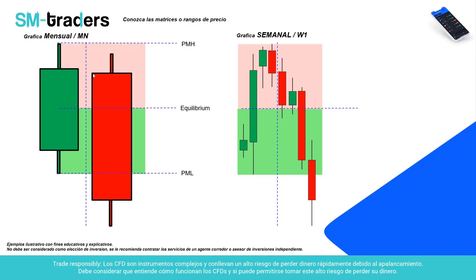Al bajarnos ya tenemos el open de esta vela, de este mes que inició. El precio sube a una zona de premium o de oferta, que es la zona rosada. Si trasladamos la visión a esta gráfica, estamos tomando el máximo —el previous monthly high o el alto anterior del mes— y el bajo más bajo del mes anterior. Dentro de ese rango de precio, entre el mínimo y el máximo, al siguiente mes van a ocurrir muchas cosas; en H1, M15, M30 y otras temporalidades, el precio va a estar oscilando.